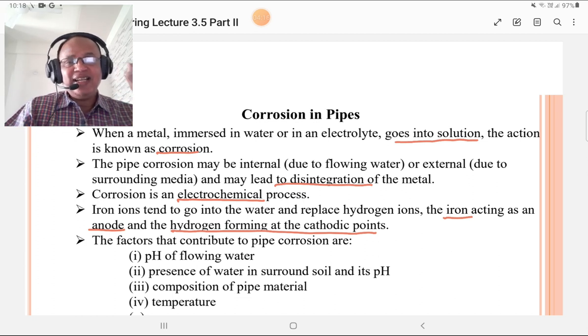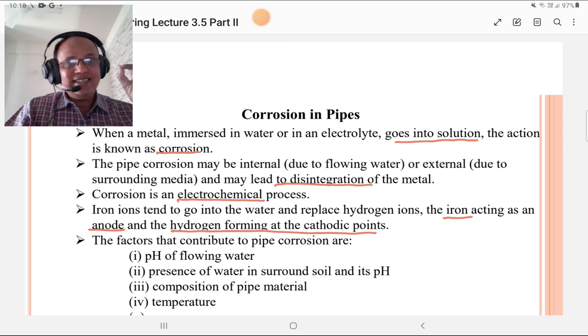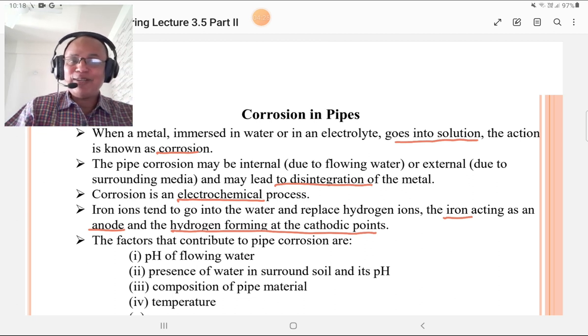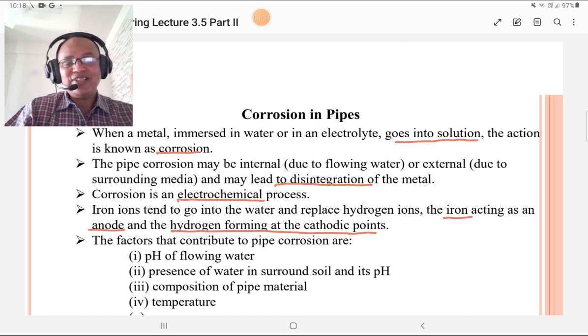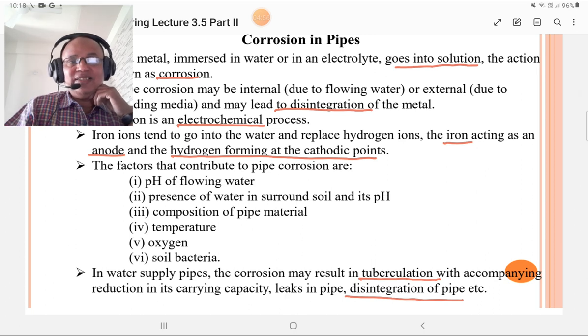For example, iron ions tend to go into water and replace the hydrogen ion. The iron acts as an anode and hydrogen forms at the cathodic points. The factors that contribute to pipe corrosion are the pH value of flowing water, presence of water in the surrounding soil and its pH, composition of pipe material, temperature, oxygen, and soil bacteria. These are the factors which contribute to pipe corrosion.